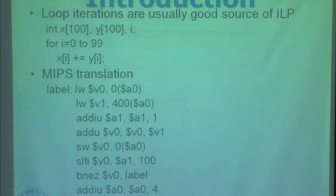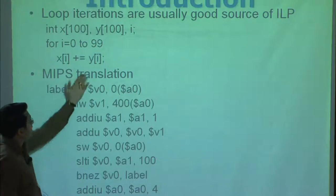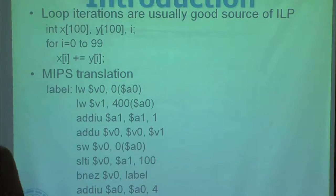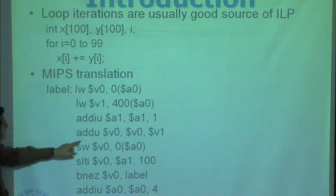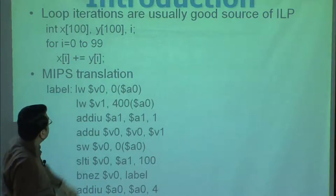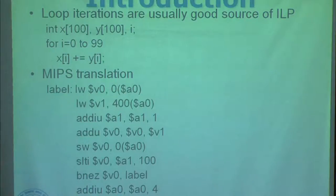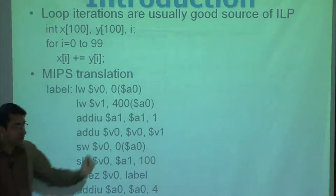This is a loop which just adds two vectors and puts the result in one of the vectors. This is the MIPS translation. Dollar a0 is the base of x and base of y is 400 dollar a0.